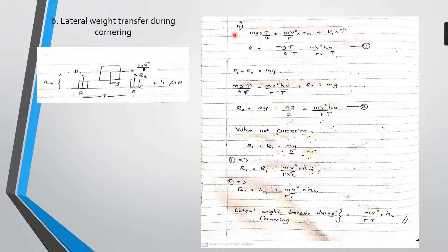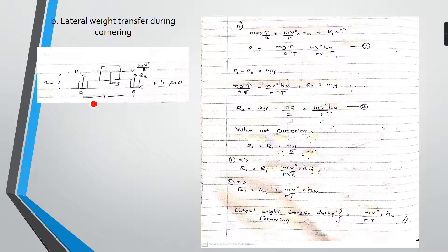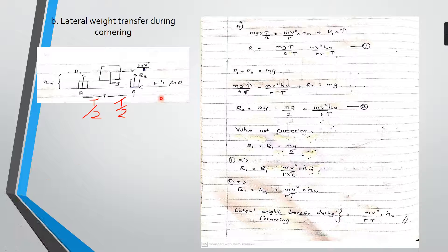We are considering a moment point here. We can identify the mass of the car. From the center to each side, the distance is t divided by 2, because this is the middle point. So both sides have a distance of t/2. The moment equation gives: mg multiplied by t/2 is equal to mv²/r multiplied by hm, plus there is another force term.